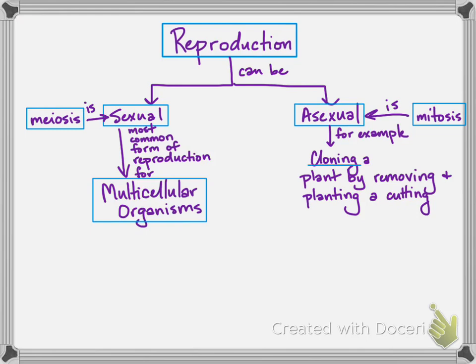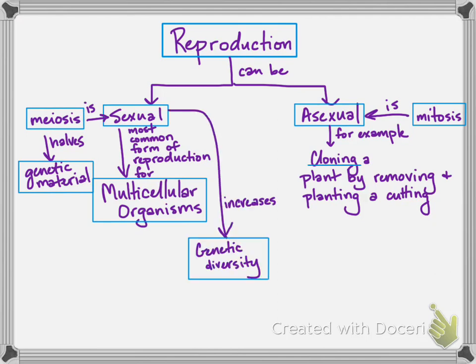That increases diversity and the chances that some offspring will survive long enough to reproduce. It also increases the odds that the parent's genes will propagate in future generations. That's all getting into natural selection, but natural selection is possible in part because of meiosis. Meiosis is halving the genetic material and increasing genetic diversity by combining two parents.